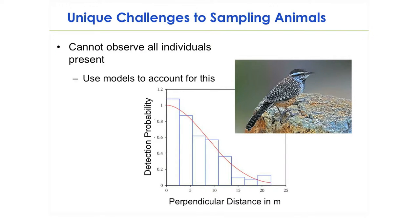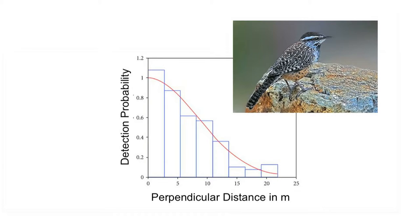Now I'm going to switch to the unique challenges of sampling animals relative to plants. We can't actually observe all individuals in the environment — we can't put a large quadrat down and count everything present. We often have to collect ancillary data to plug into models to account for this inability to detect all individuals. In bird sampling, for example, we collect data on the distance between the observer and the bird. The detection probability is modeled and generally decreases with increasing distance.